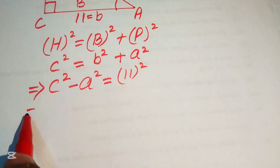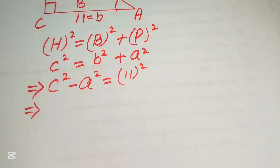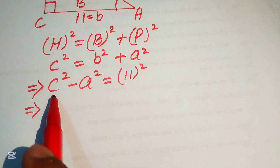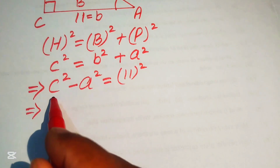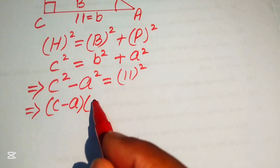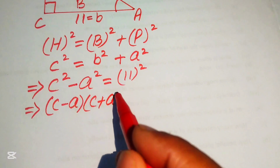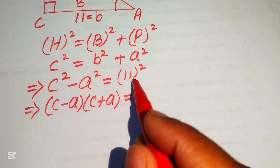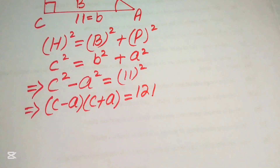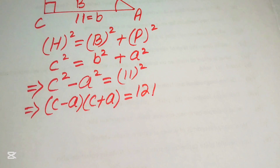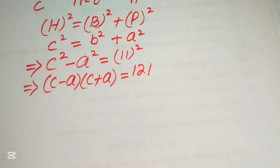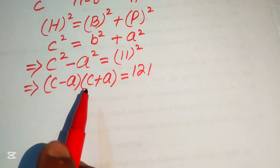For further simplification, we apply the algebraic difference-of-squares formula to the left-hand side: c² − a² = (c − a)(c + a). On the right-hand side we have 11² = 121.